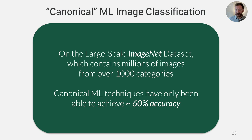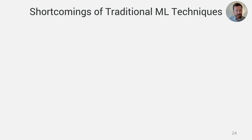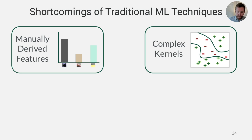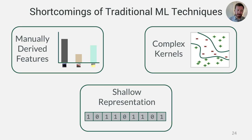On the large-scale ImageNet dataset, canonical machine learning achieves only about 60% accuracy, largely due to the difficulty of the feature engineering process. The shortcomings of traditional ML include: manually deriving features is expensive and complicated; the kernels or functions needed are computationally complex; and features may have a shallow representation that doesn't capture the hierarchical depth needed to make good class distinctions.